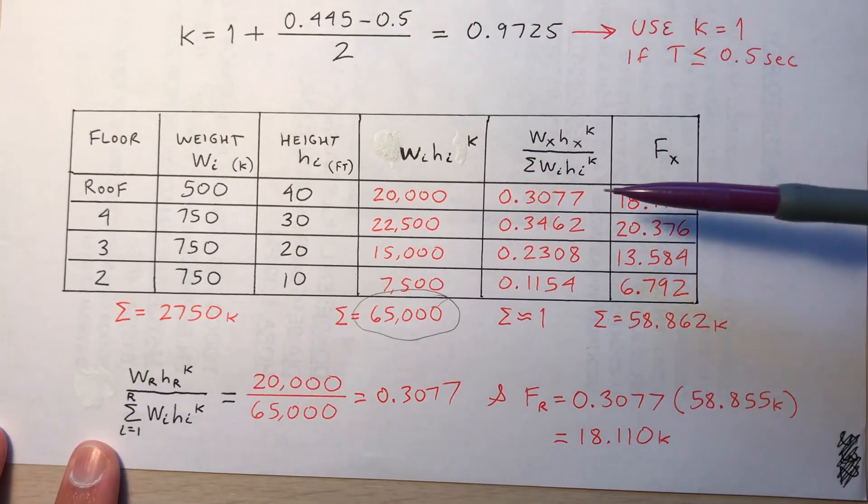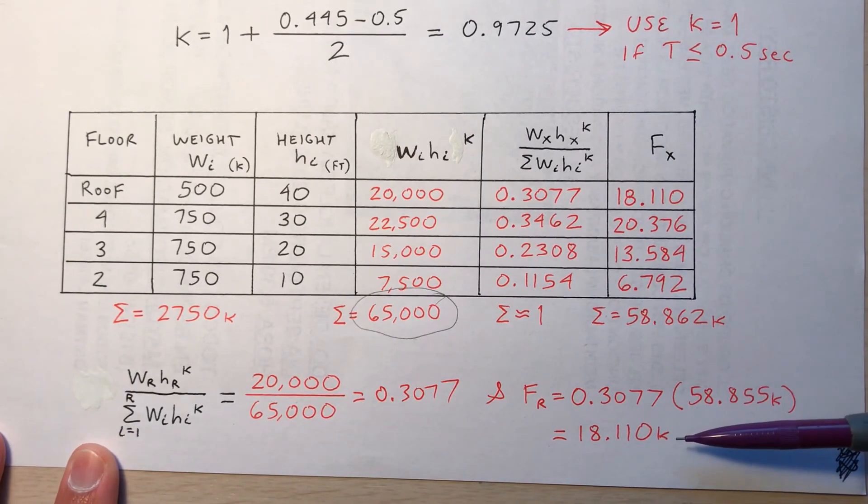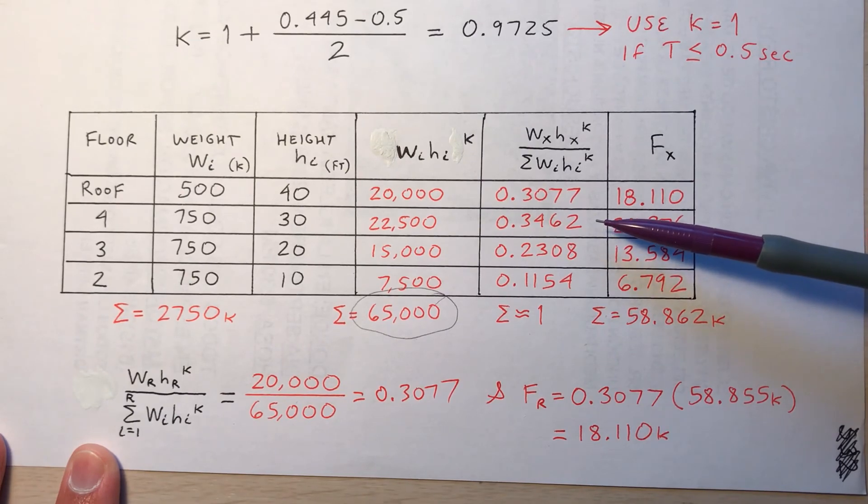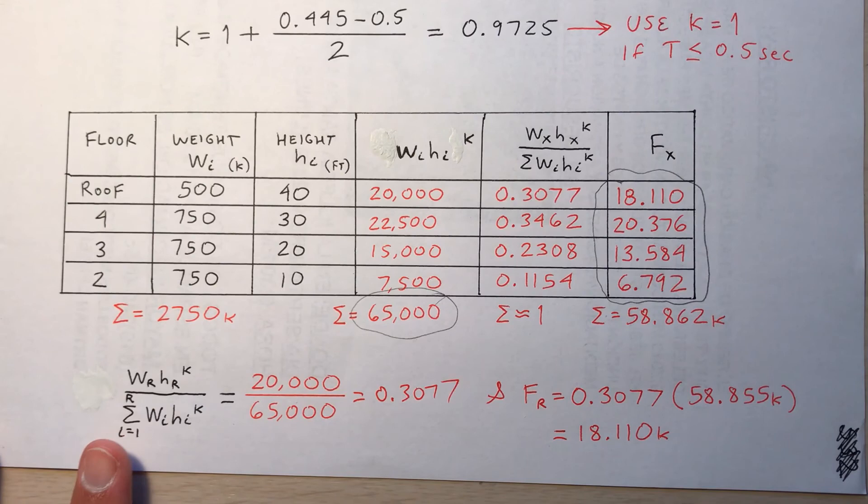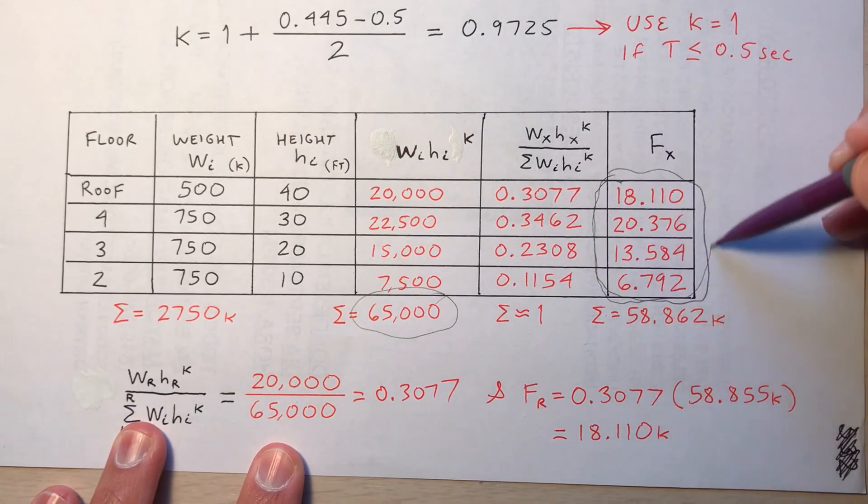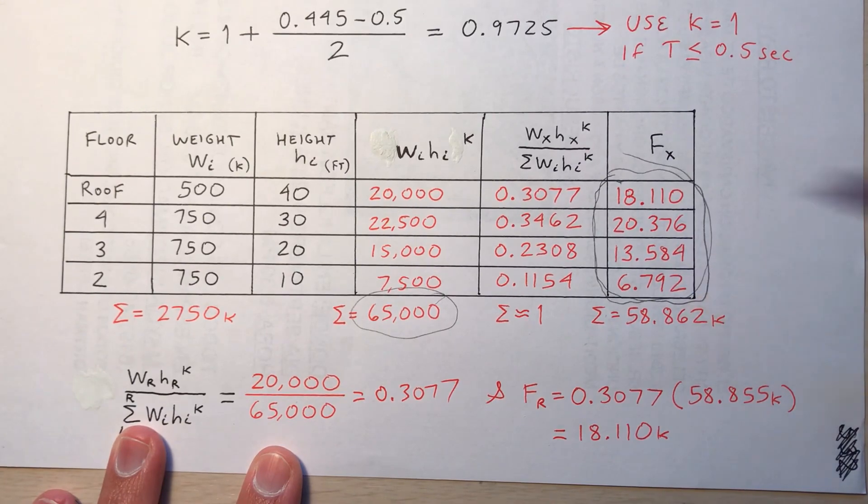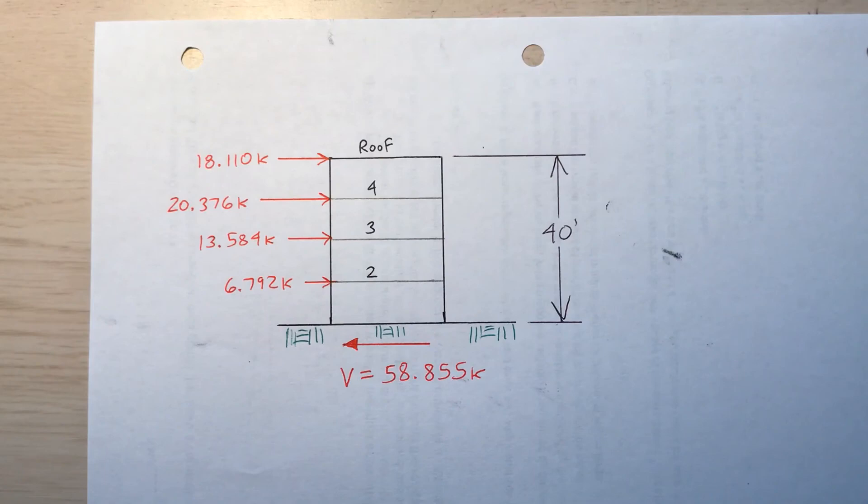So here's the sample calculation for the roof. 0.3077 times the base shear, 58.855, 18.110 kips that will be carried by the roof. And then similarly with the others. So 0.3462 times the base shear, 58.855 should be 20.376, etc. So this column right here. Remember these numbers. Notice that if you add them up, you wind up with 58.862, which is approximately equal to the original base shear that I calculated. There'll be rounding discrepancies, but this is how I distribute the base shear to each of the floors. So remember these numbers. This many kips to the roof. This many kips to the fourth floor. This many kips to the third floor. This many kips to the second floor.